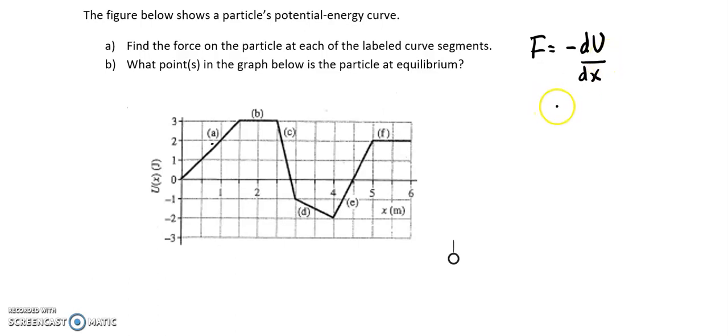To find the derivative, that is the slope of the U versus x graph. I'll find the slope and then put a negative in front.